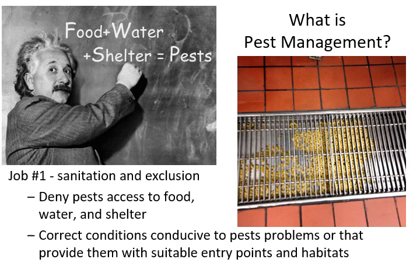The other thing we look at a lot is exclusion, and that's when we look at the outside of a building and look at ways that pests might be getting in. For example, if you were looking at an exterior door and saw light coming underneath the bottom of the door, that would be an easy way for a pest to get in — even a cockroach or a mouse. So closing up that gap is another method of pest management we can incorporate into our strategy.